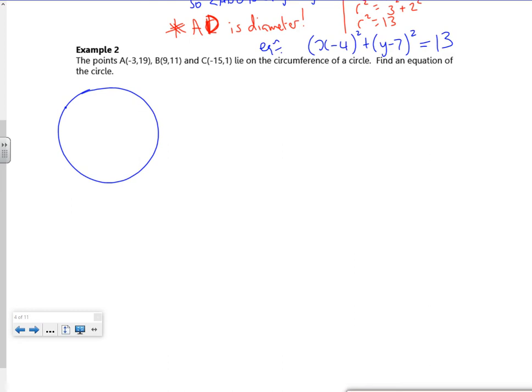Because if you think about the one's going to be the lower one. So, let's just go with A minus 3, 19. And there's B. B, 9, 11. C, minus 15, 1. We're not really to scale anymore.